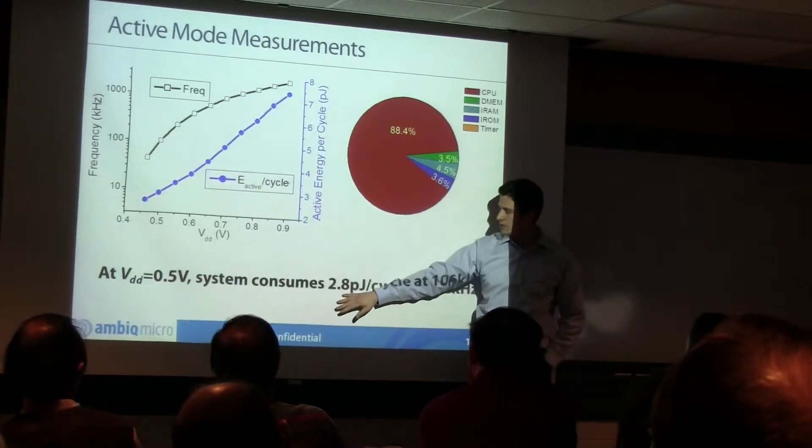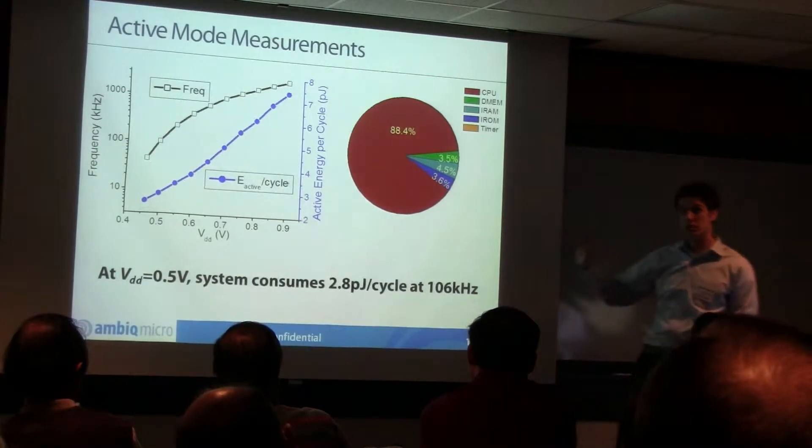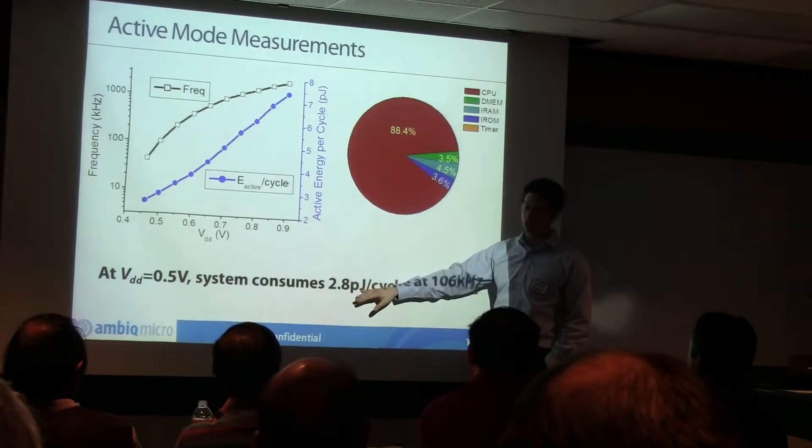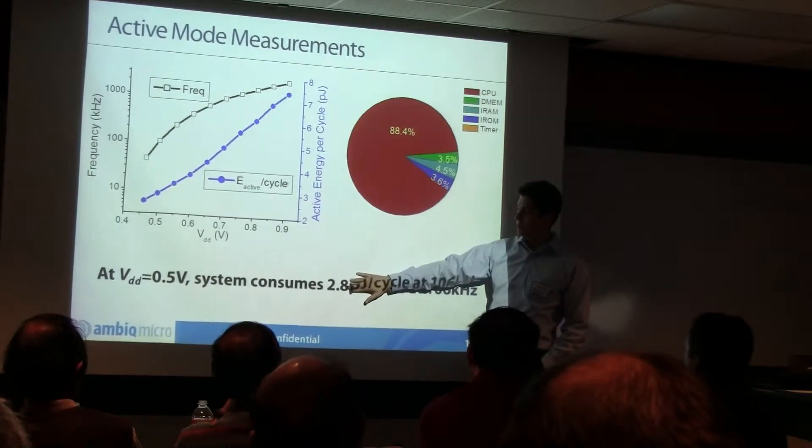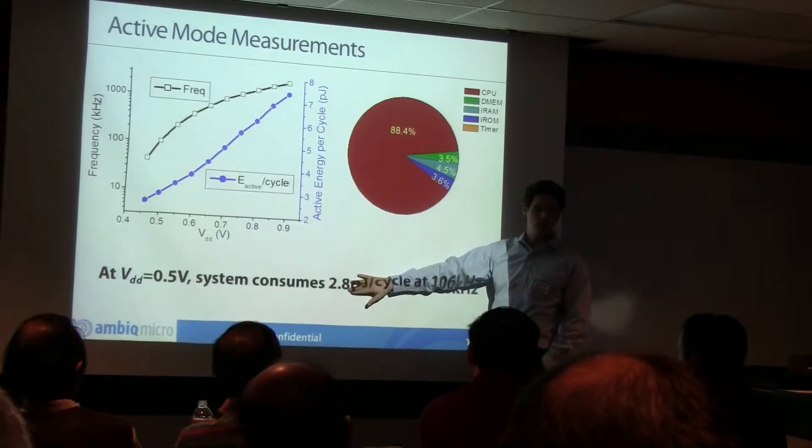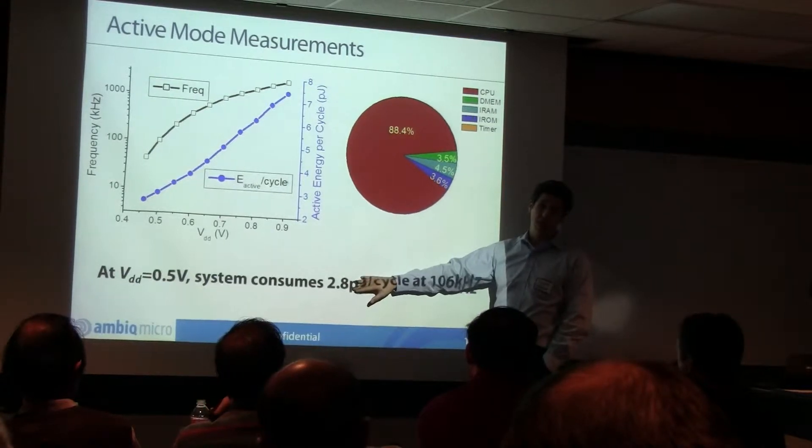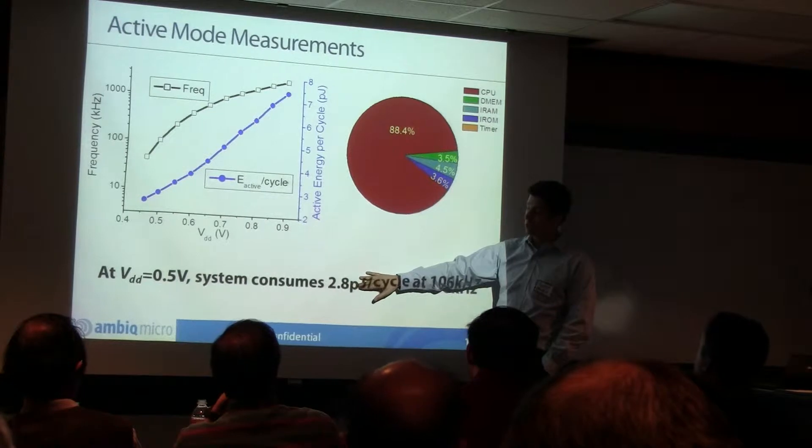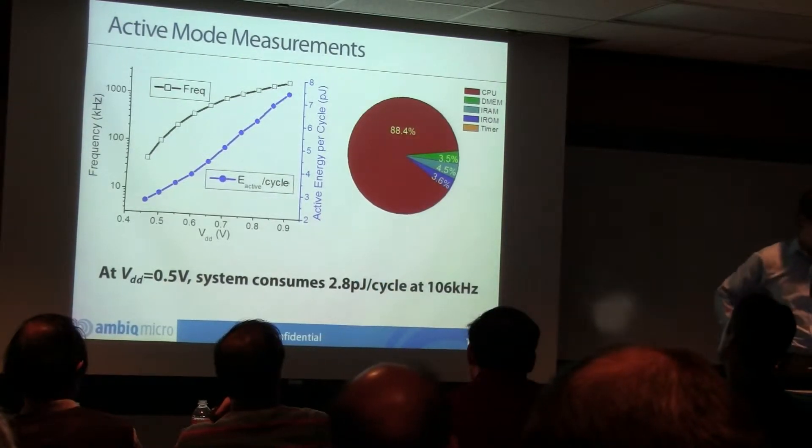For those of you who think of microwatts per megahertz, this is equivalent to 2.8 microwatts per megahertz. So picojoule per cycle and microwatts per megahertz are actually the same, interchangeable. This is very, very low. Your typical off-the-shelf microcontroller today is somewhere north of 200 microamps per megahertz, and you have to multiply the voltage. So we're talking quite a bit lower than your typical off-the-shelf devices today.